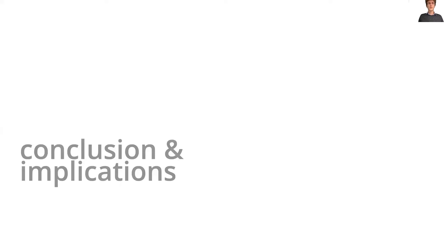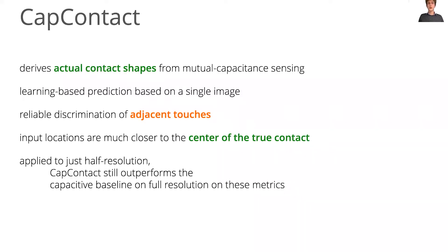In conclusion, we have introduced the first investigation of deriving actual contact shapes from mutual capacitance sensing. Our data-driven method, CapContact, estimates the contact area from a single capacitive image, reliably discriminating adjacent touches and bringing input locations closer to the center of true contact, even when applied to a sensor with just half-resolution.